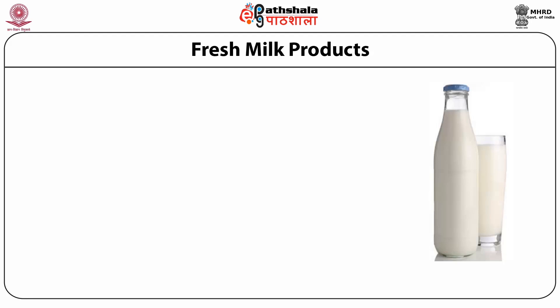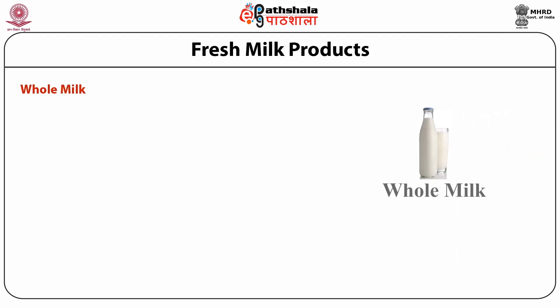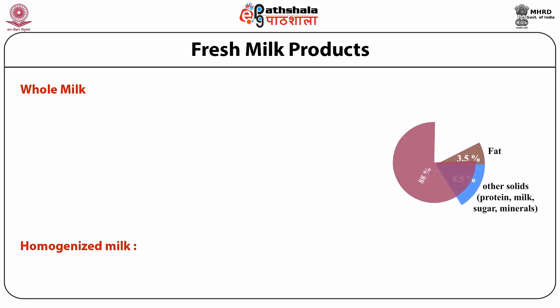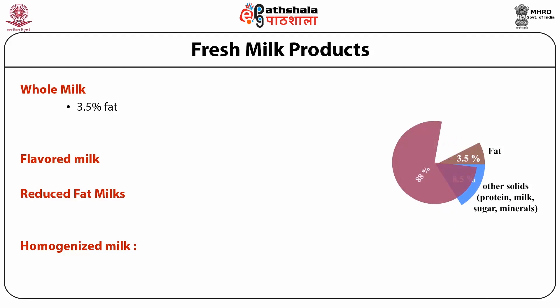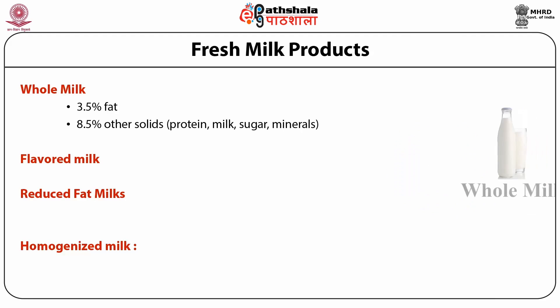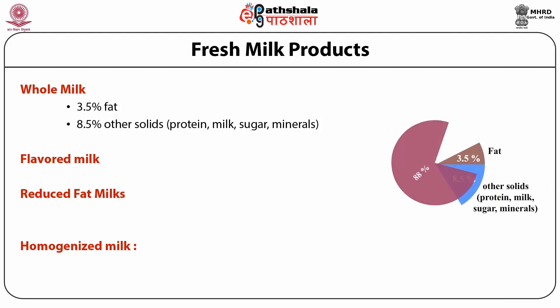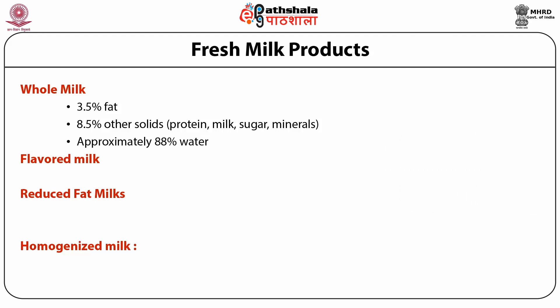When milk is consumed as fresh milk, it may be fresh whole milk, pasteurized milk, homogenized milk or flavored milk. Fresh whole milk generally contains 3.5% fat, 8.5% solids which are milk proteins, milk sugar and minerals, and approximately 88% water. Milk may also be consumed as reduced fat milk.